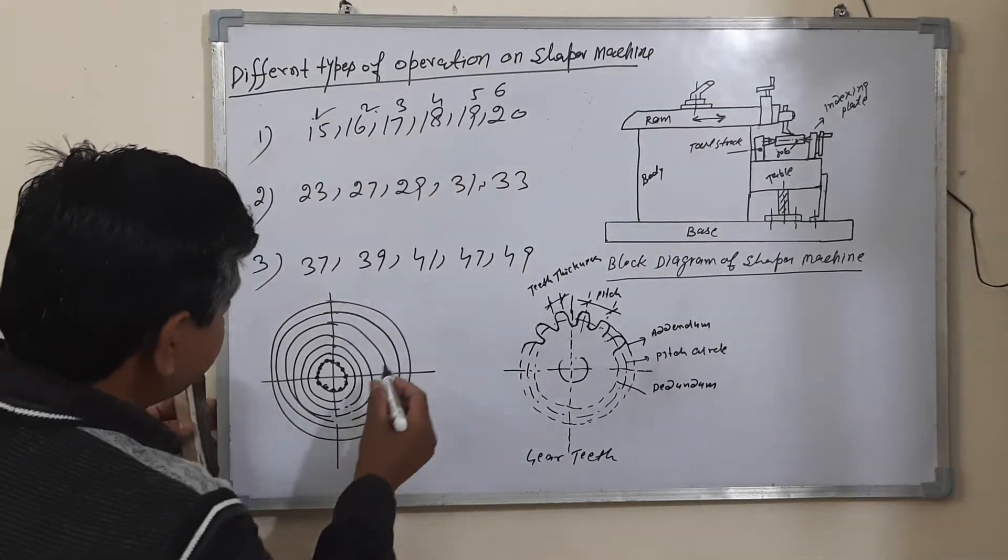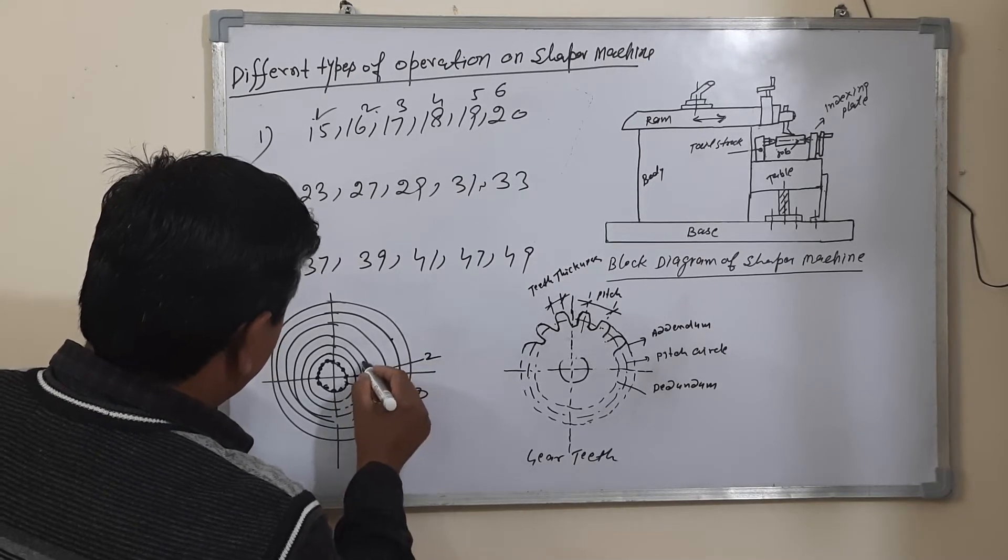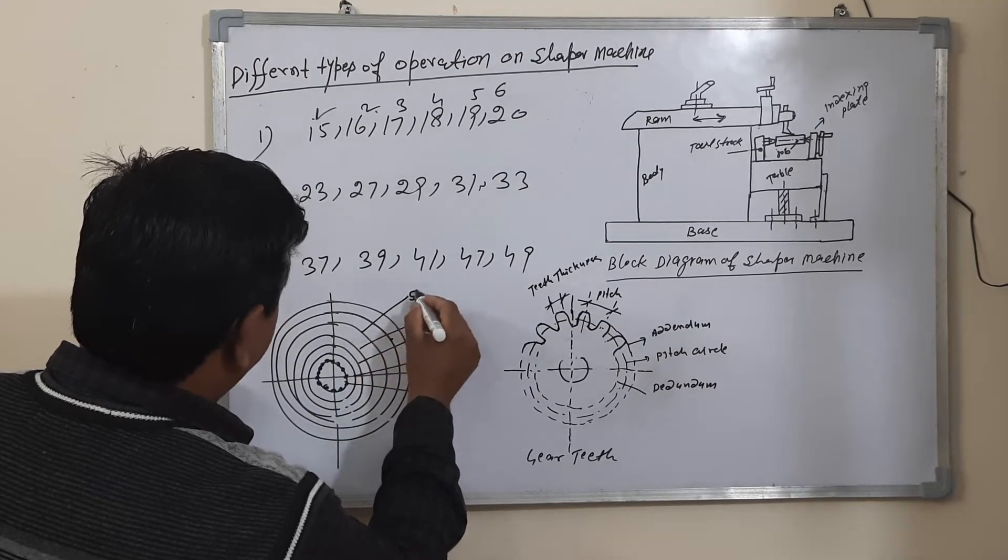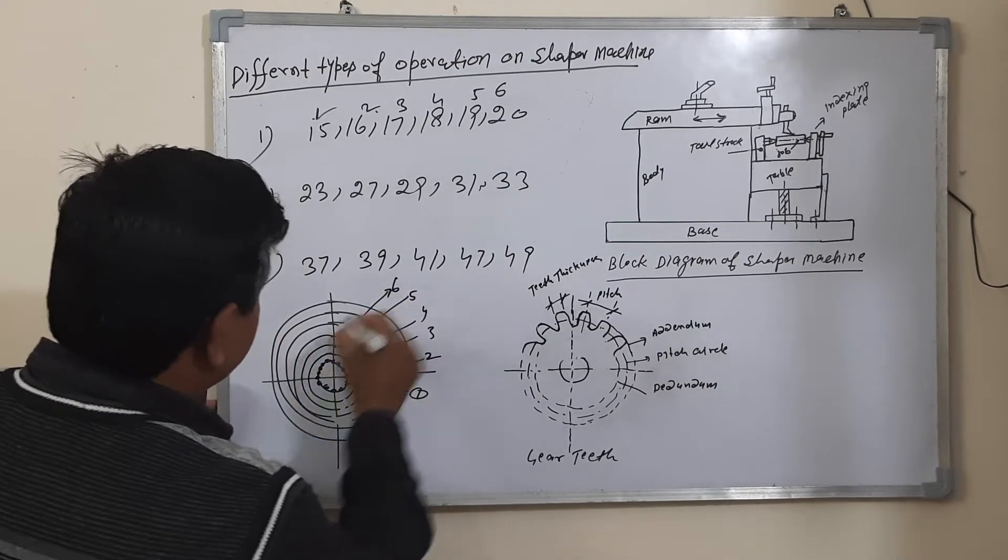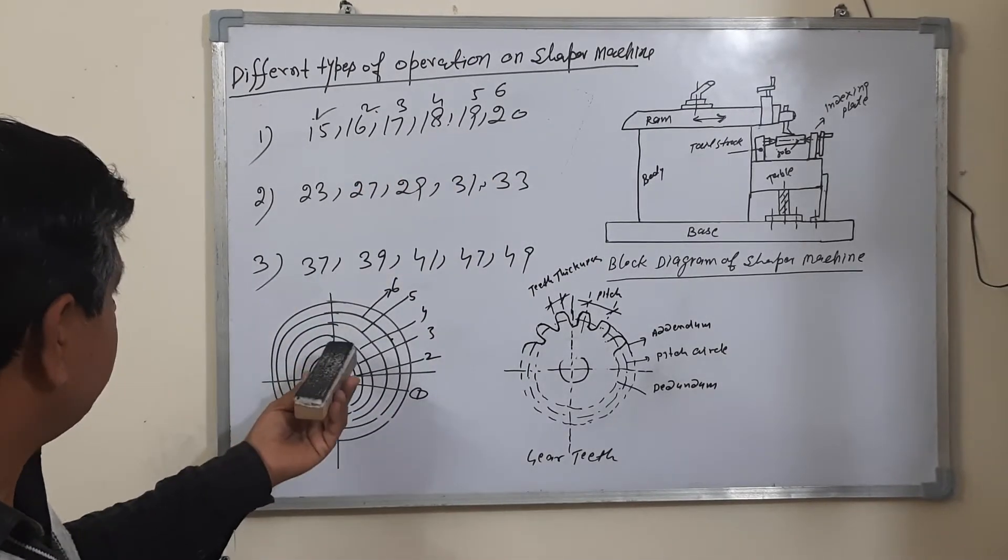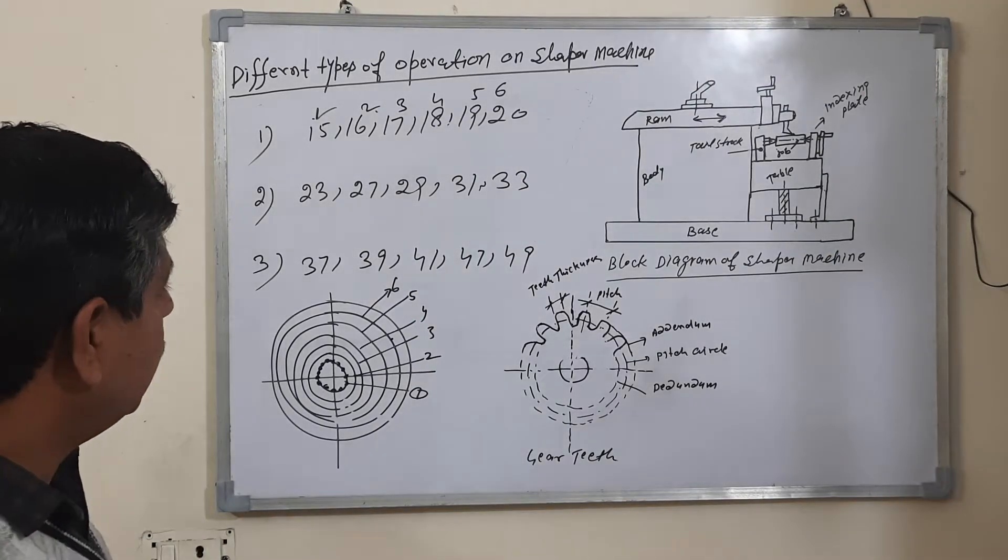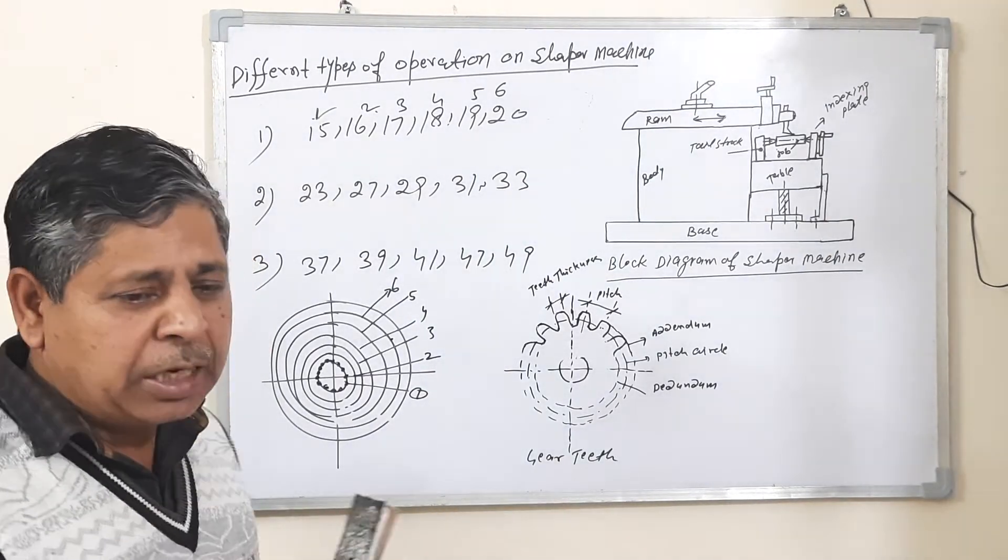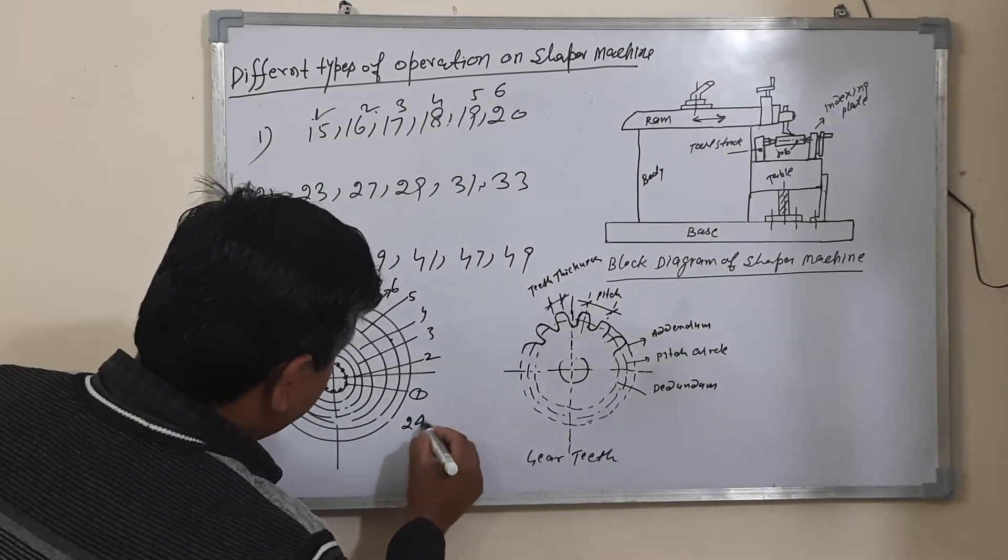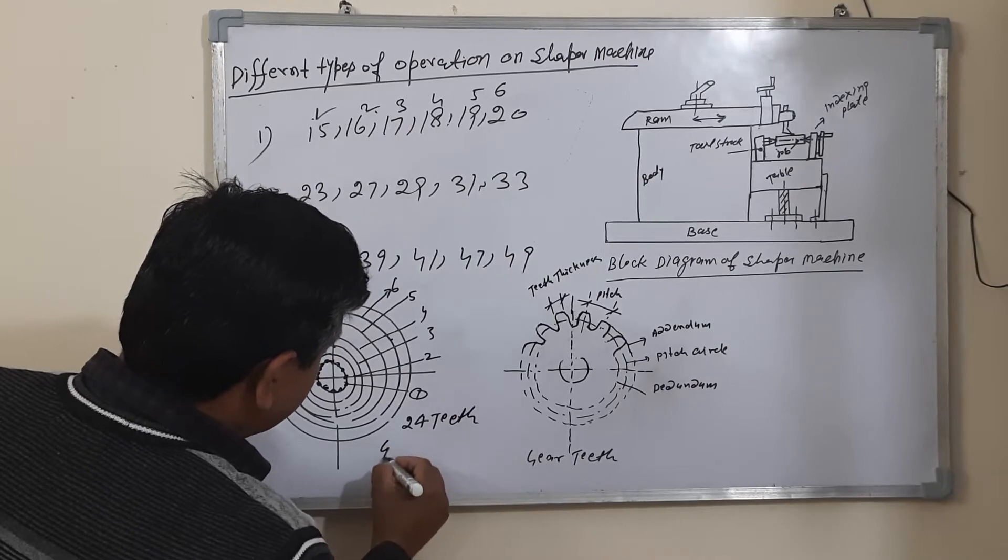Same thing for number 1, number 2, number 3, number 4, number 5, number 6. How to select the indexing plate to cut the gear? For example, you will cut a gear with 24 teeth. The indexing plate is the given data.